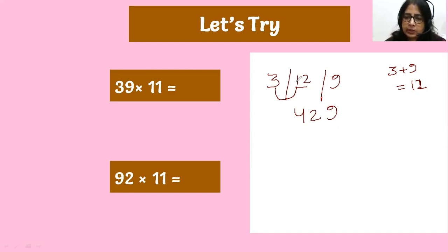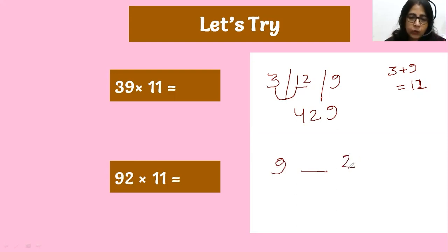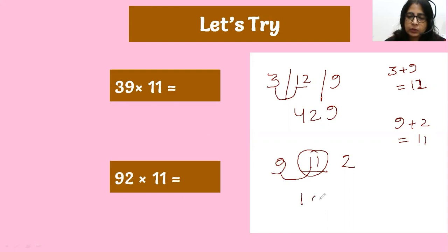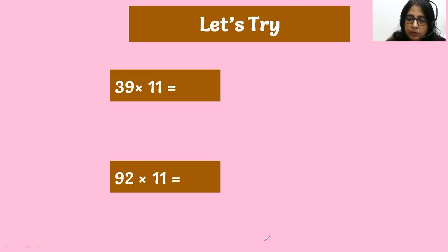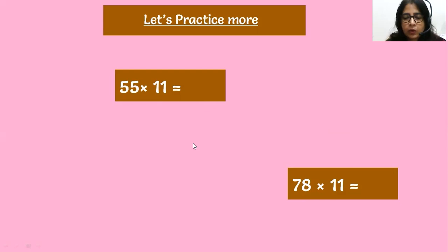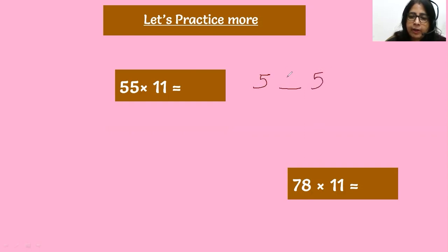For 92 into 11: nine, space, two. To fill the space: nine plus two is eleven — write eleven in two digits and carry forward the one. So carry one to the nine: nine plus one is ten. The answer is 1, 0, 1, 2. For 55 into 11: five, space, five. Five plus five is ten — carry forward the one. So the answer is 6, 0, 5. Simple and easy, no need of any steps.